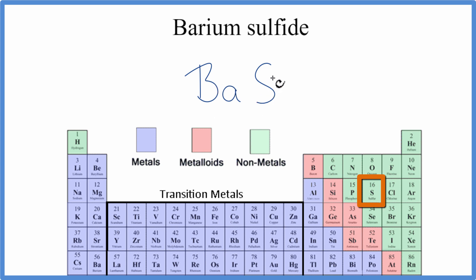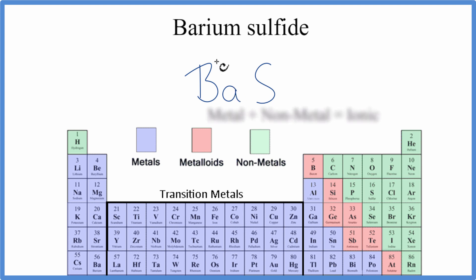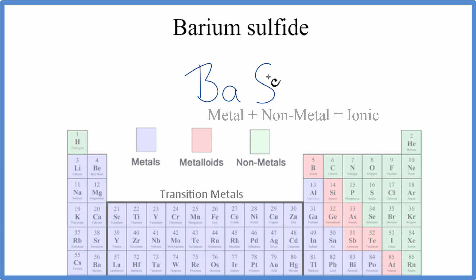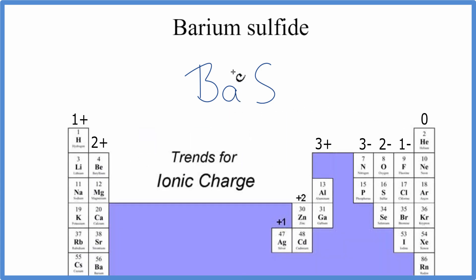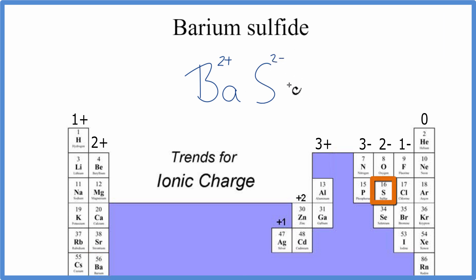Barium is a metal, and sulfur's a non-metal, so we have an ionic compound. When we have an ionic compound, we need to take into account the ionic charge on each of the elements. Barium has a 2 plus ionic charge — it's in group 2. And the sulfide is a 2 minus.